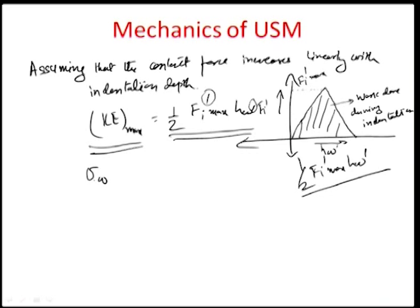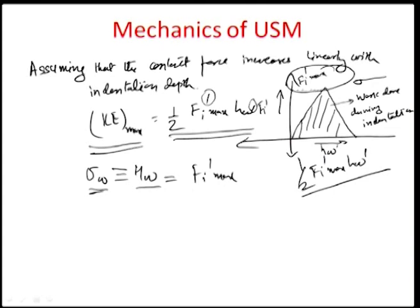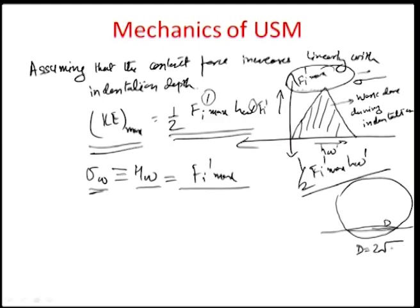Sigma_w, which equals the hardness of the workpiece, is related to the maximum force at the point of maximum indentation. So f_i_dash_max per unit area equals sigma_w. The total projected grain diameter on the workpiece surface is capital D = 2 times root of (d times h_w), where h_w is the depth of indentation — a relationship established in the first USM modeling exercise.